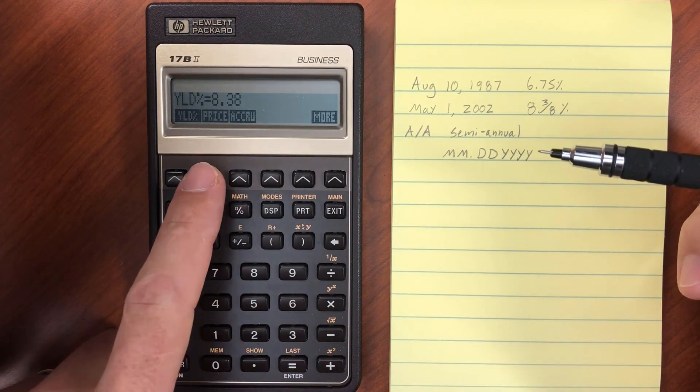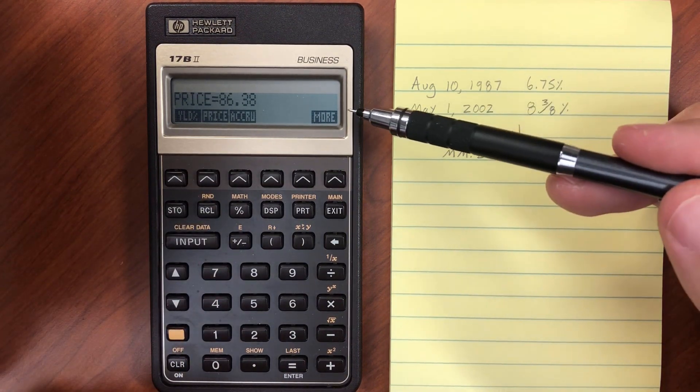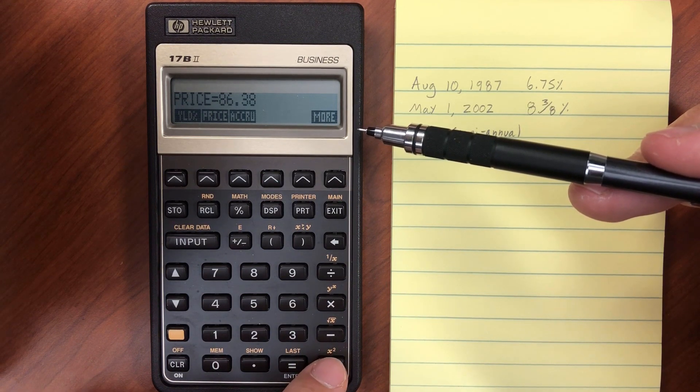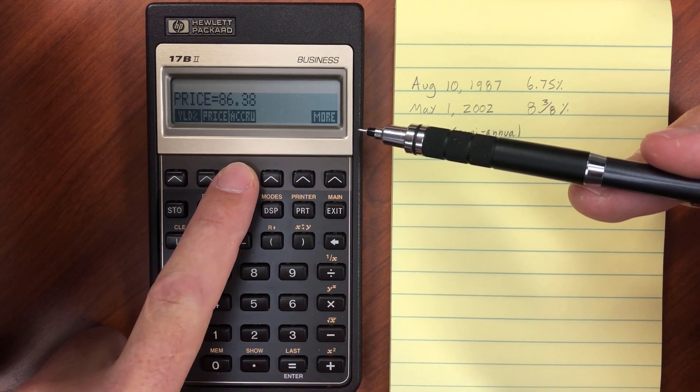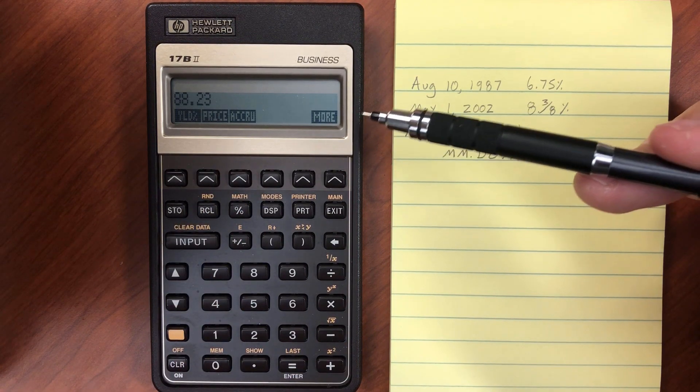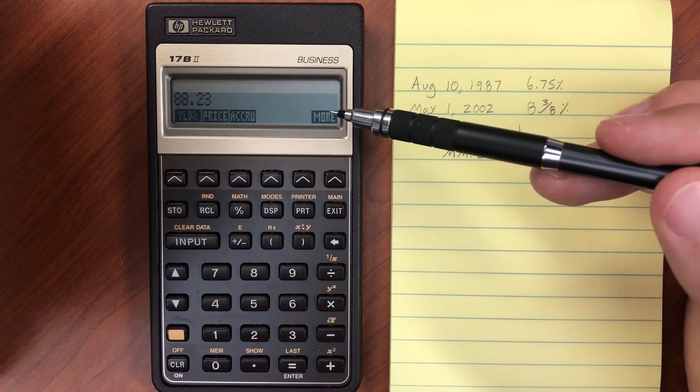So our price, let's calculate that, is going to be 86.38, and then let's add that to the accrued interest, and we have 88.23.